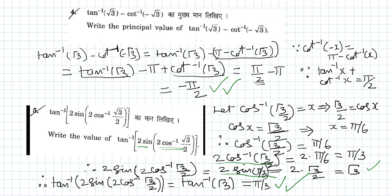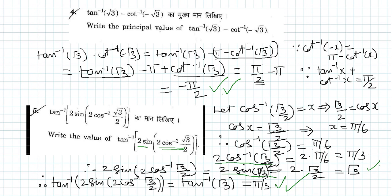Now come to the next level. Therefore, 2 sin of 2 cos inverse root 3 by 2 is equal to 2 times sin of pi by 3, since twice cos inverse of root 3 by 2 equals pi by 3. That is equal to 2 into sin of pi by 3, which is root 3 by 2. So 2 into root 3 by 2 equals root 3.